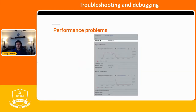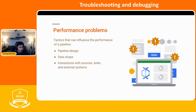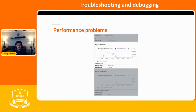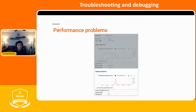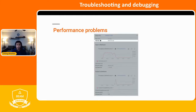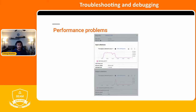The user interface provides a lot of useful information to debug performance at a step level. The step info section can provide useful information including wall time, input elements, and input bytes — how many elements are being added to that step in your Beam pipeline — and also your output elements and output bytes. The wall time for a step provides the total approximate time spent across all threads in all workers doing initialization, processing the data, shuffling the data, and ending the step. The input element count is the approximate number of elements that the step received, and the output element count is the number of elements processed by the step.